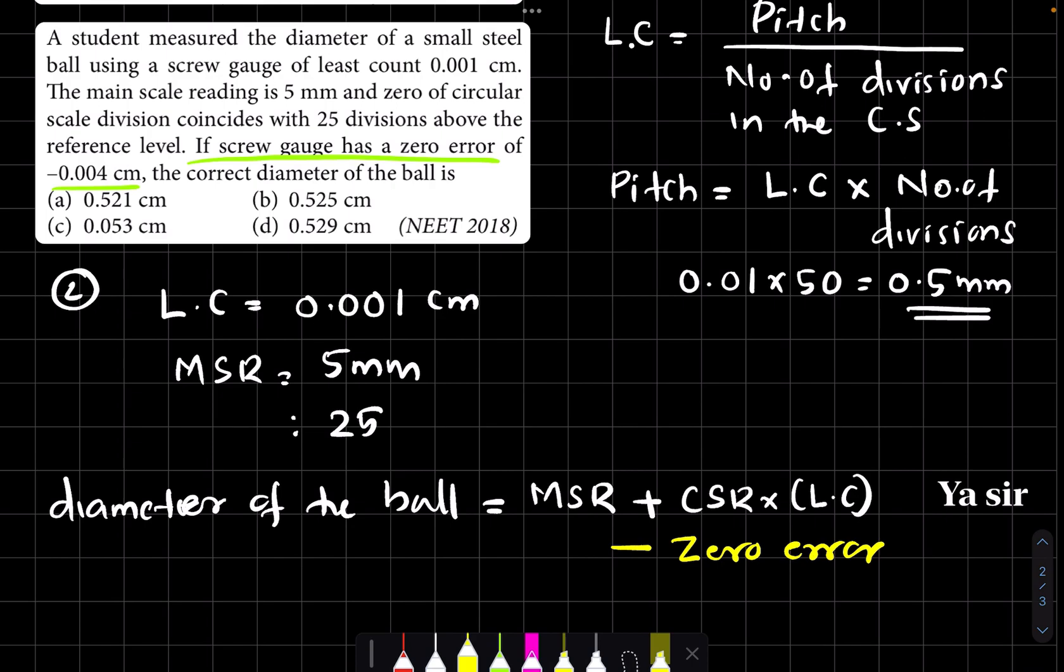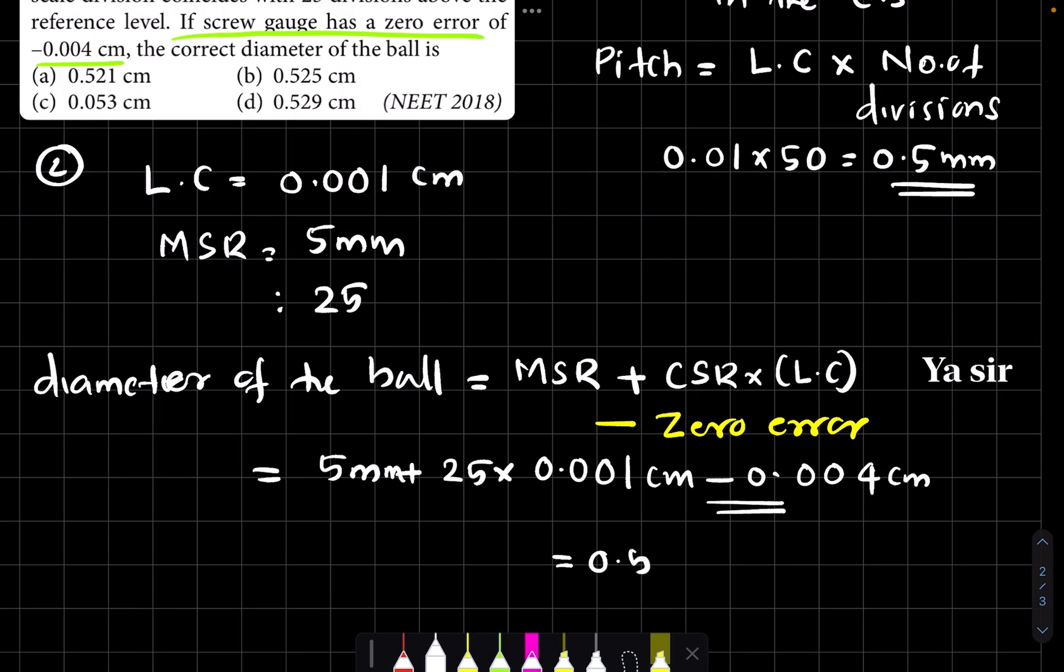Applying the values: 5 millimeter plus 25 times 0.001 centimeter minus 0.004 centimeter. When we calculate this, the answer comes to 0.529 centimeter. This is the real value of the diameter. Converting 5 millimeter to 0.5 centimeter and doing all the steps gives us 0.529 centimeter.